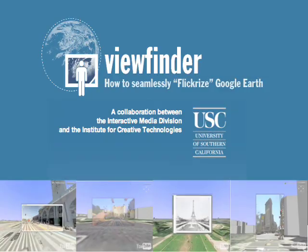There's a new tool called Viewfinder. It allows you to flickerize Google Earth. Not only will it attach your photo to any geographical location, it also positions it at the correct angle, so it blends into the 3D-rendered Google Earth landscape. This stuff's really cool — if you haven't seen it, be sure to check it out.